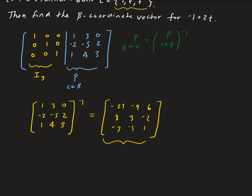So this is our change of coordinates matrix from C to beta. Now we can use this — we're going to take this matrix and multiply it by the corresponding vector for minus 1 plus 2t. Using the isomorphism property, the vector is going to be minus 1, 2, and then 0.